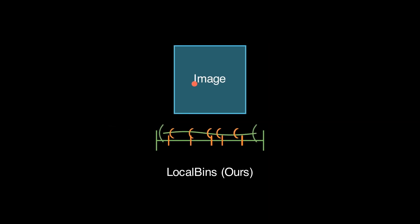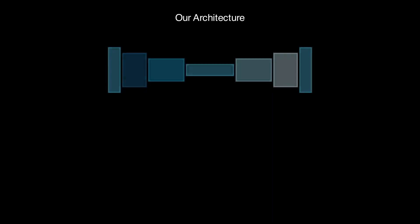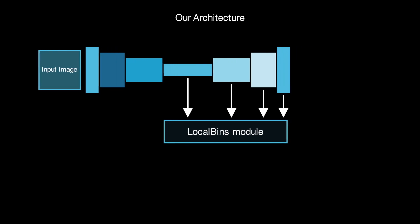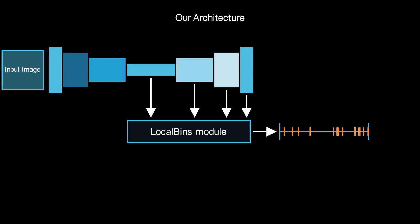Bin centers at each pixel can encode the distribution of the depth values in its local neighborhood. Our architecture consists of a unit along with our proposed local bins module composed of only one-by-one convolutional layers that predicts the bin centers at each pixel.